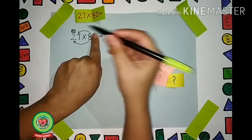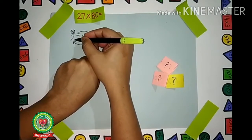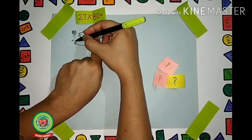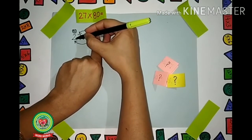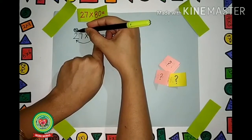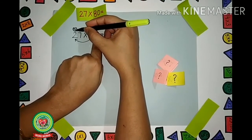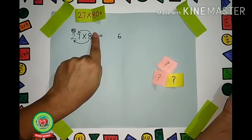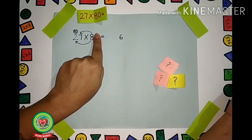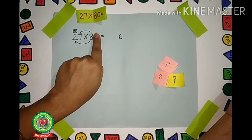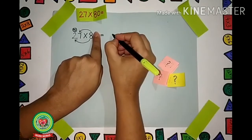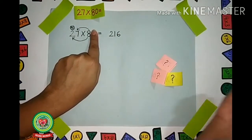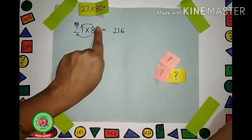Now the next digit is 2. So we have to multiply 8 with 2. 8 × 2 are 16, plus 5 carry. Count 5 after 16: that gives us 21. Write 21 over here. The number is 216.